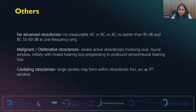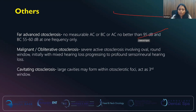A few other terms: far advanced otosclerosis is where air conduction is no better than 95 dB loss and bone conduction 55 to 60 dB loss, but at least at one frequency. Malignant or obliterative otosclerosis involves severe active otosclerosis involving the oval and round windows, initially with mixed hearing loss progressing to profound sensorineural hearing loss. When it is obliterative or malignant otosclerosis, the foci can be many and progress. If they also involve the round window, the hearing loss can be very severe and profound, also causing sensorineural hearing loss.